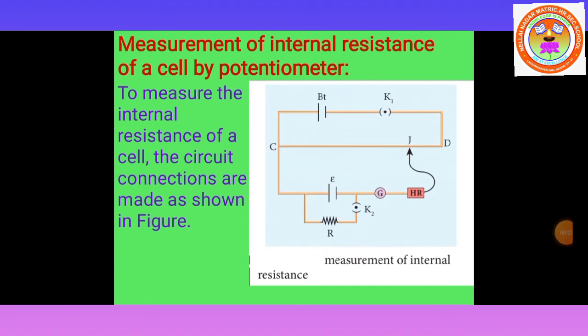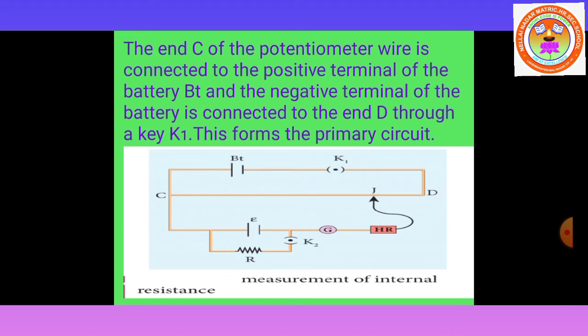Next topic: measurement of internal resistance of a cell by potentiometer. Previously we discussed the comparison of electromotive force of two cells using a potentiometer. Now, to measure the internal resistance of a cell, the circuit connection is shown in the figure. The end C of the potentiometer wire is connected to the positive terminal of the battery, and the negative terminal is connected through key K1 — this forms the primary circuit.